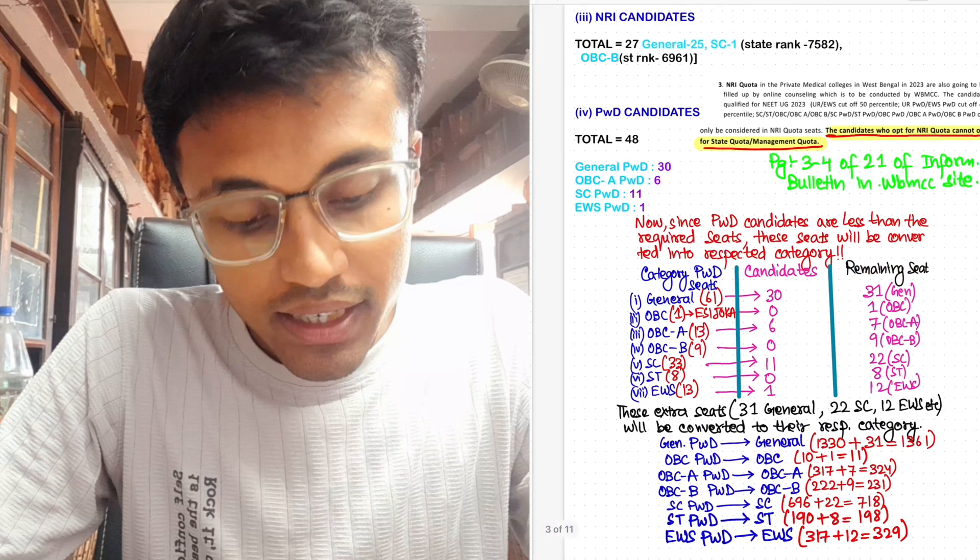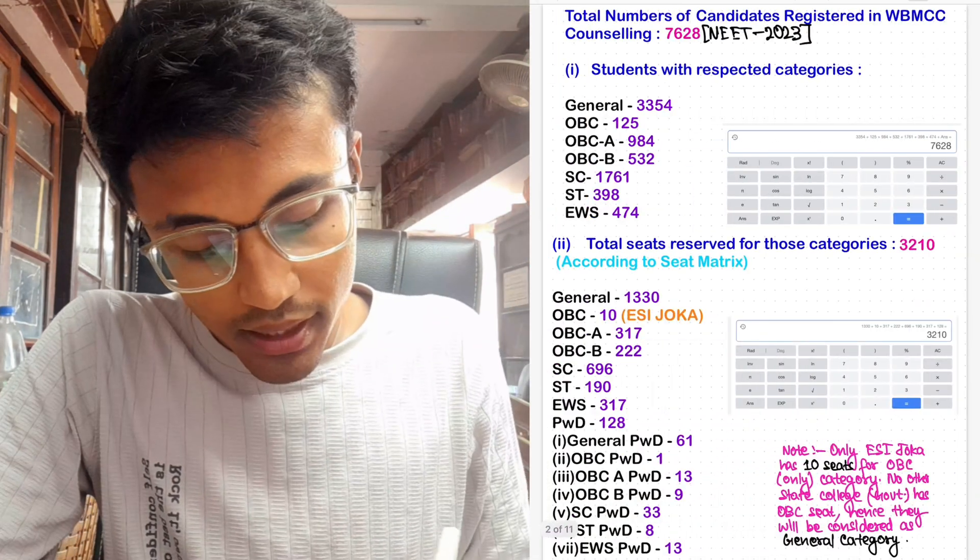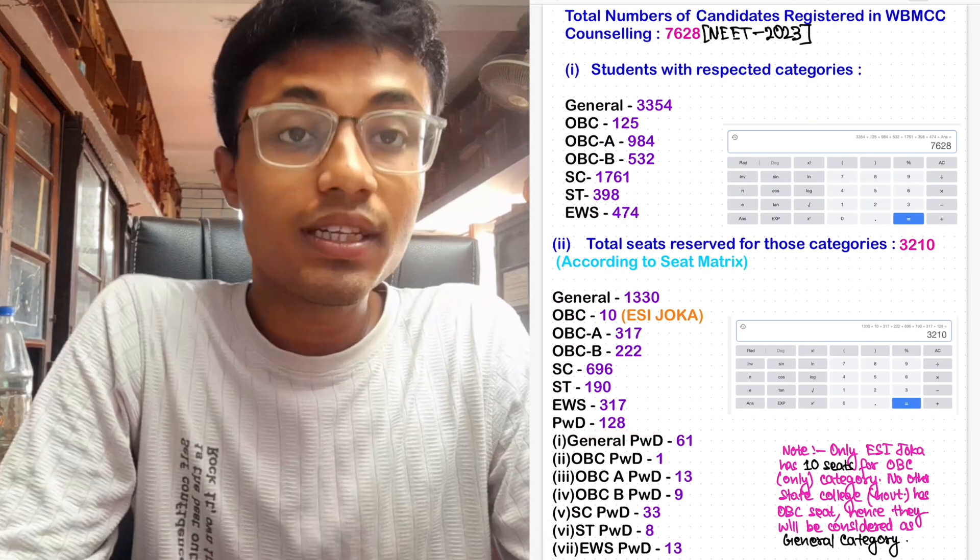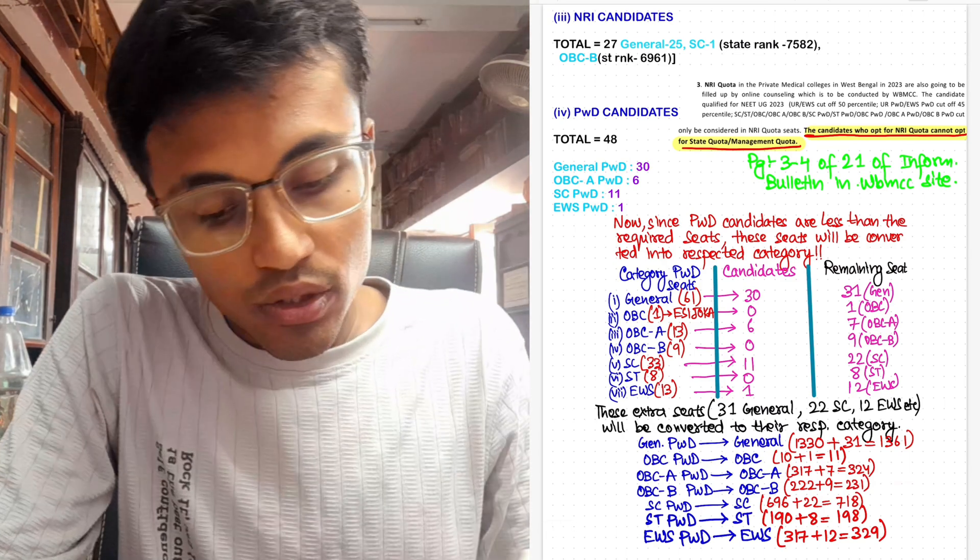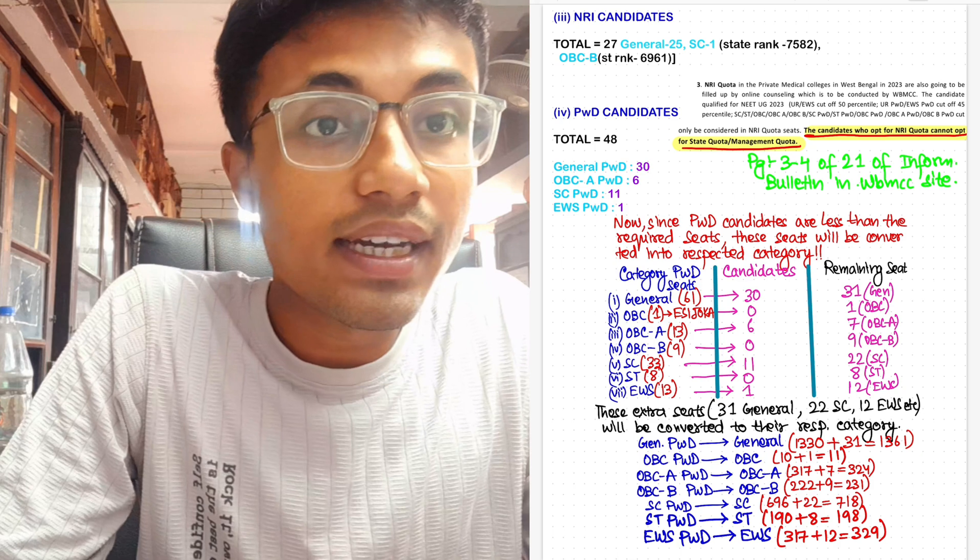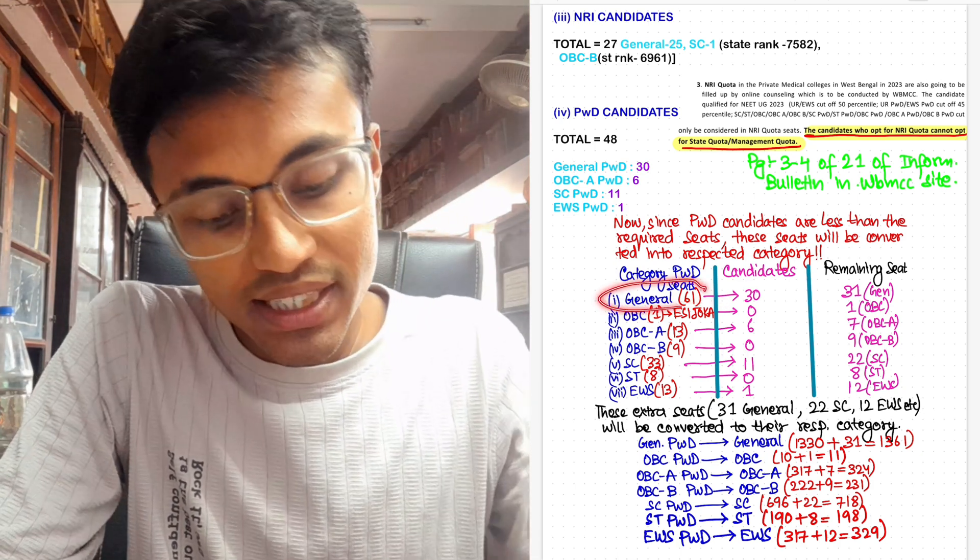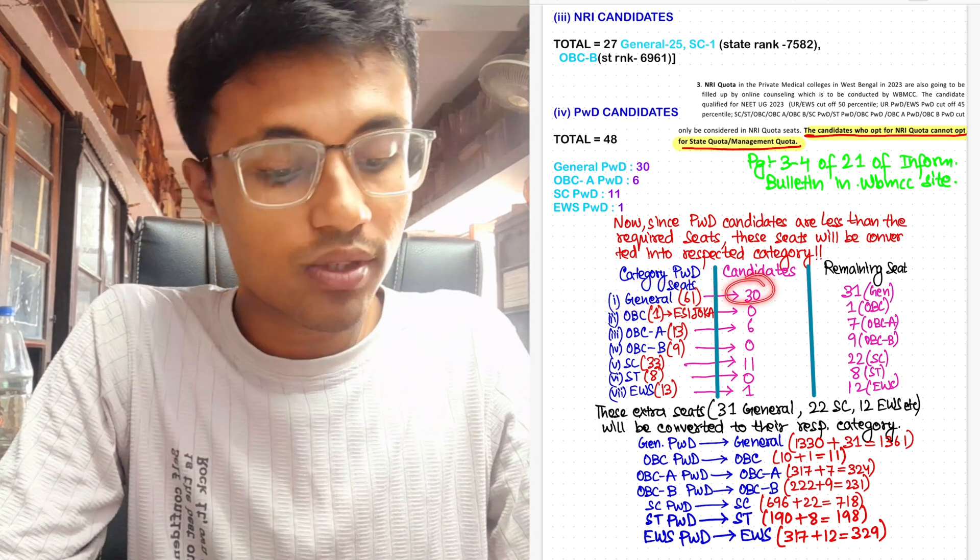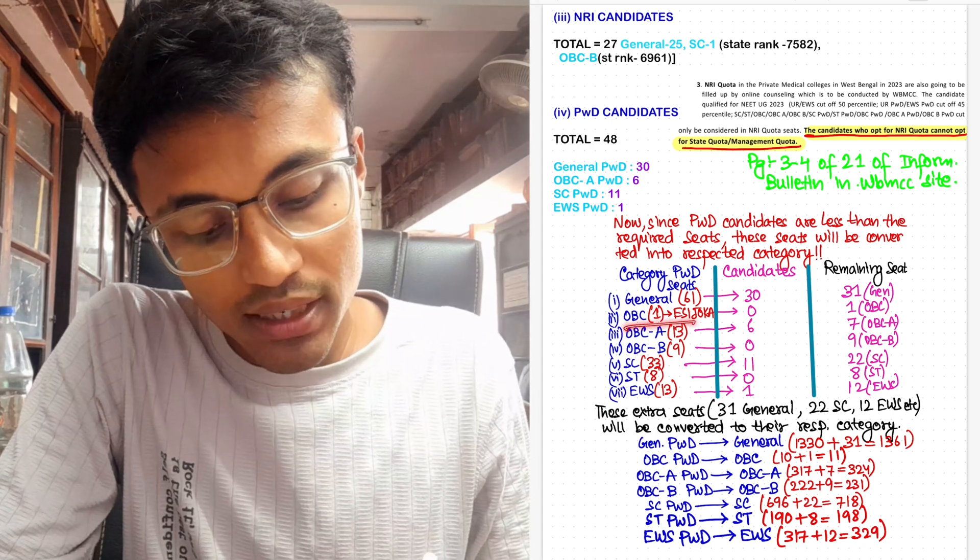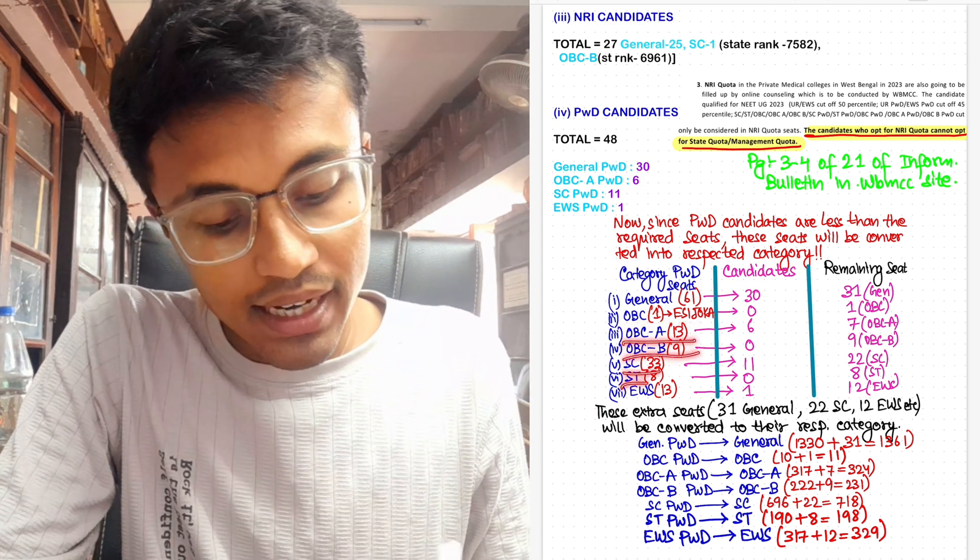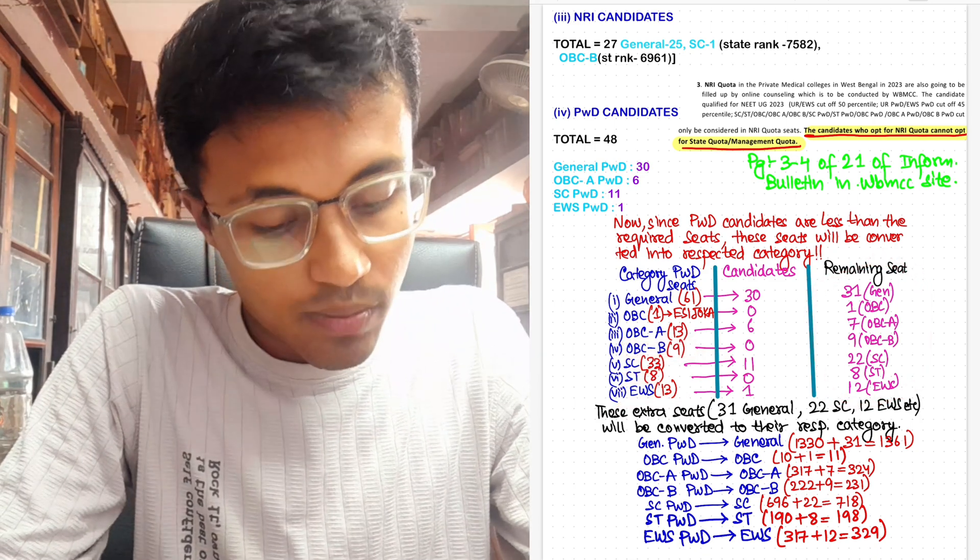Now what's interesting to note is that since PWD candidates are less than the required seats—the required seats for PWD candidates allotted by the state of West Bengal is 128, however the students who have only participated are 48—so these seats will be converted into respective categories once they are unfilled. Like for general, it is total 61 PWD seats, but the candidates are only 30, so the remaining 31 seats will get into the general category. Same goes for OBC, OBC-A, OBC-B, SC, ST, and EWS. The remaining seats of the PWD quota will get converted with their respective category.